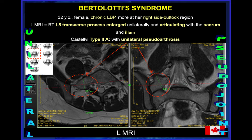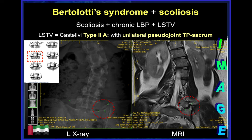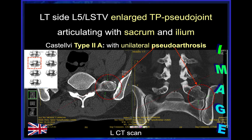A typical image shows the pseudo-articulation between the enlarged transverse process of L5 with the sacrum and iliac crest. We also associate scoliosis with a pseudo-joint, visible on X-ray and MRI. The pseudo-joint can also be very easily identified by CT scan.